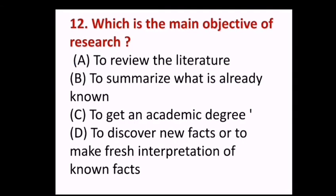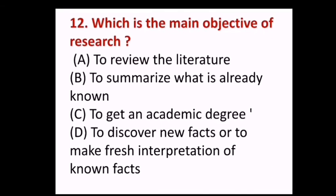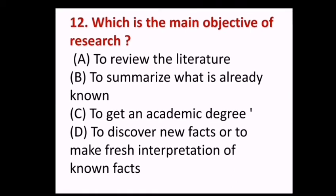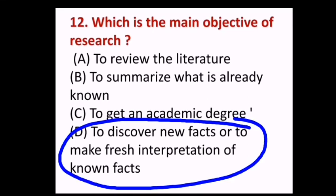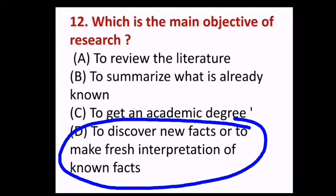Next question: Which is the main objective of research? (A) To review the literature, (B) to summarize what is already known, (C) to get an academic degree, (D) to discover new facts or to make fresh interpretation of facts. Answer D, to discover new facts or to make fresh interpretation of facts.